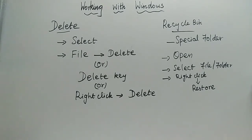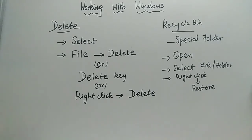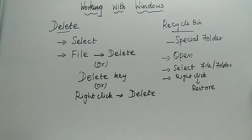When restored, the file will appear in the location where it was originally stored. For example, if you deleted test1.doc from C drive, after restoring it will be seen back in C drive. You don't need to look for it in the Recycle Bin — it will go back to its original location.